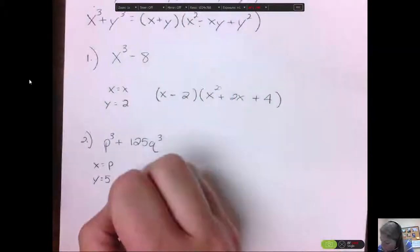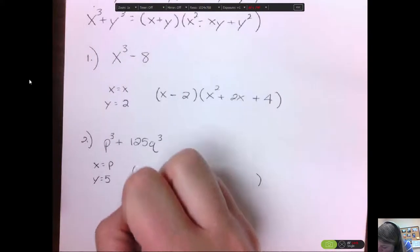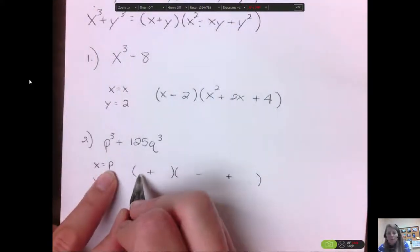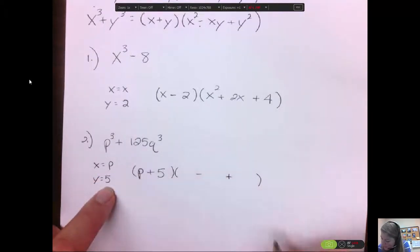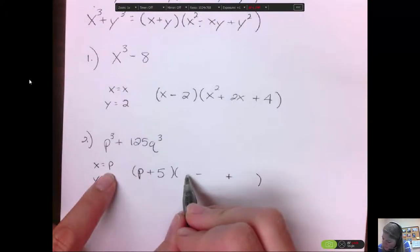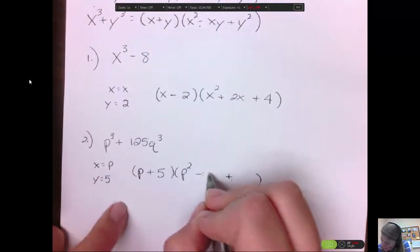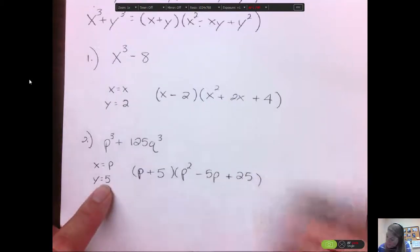So then we do our parentheses. It starts with a plus. So my formula says plus, minus, plus. And it says the third root of the first one, which is p. And it says the third root of the second, which is 5. And then it says square the first one, which is p squared. And then it says times them together. 5 times p is 5p. And the last one, 5 squared is 25.